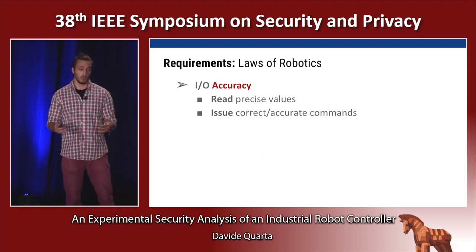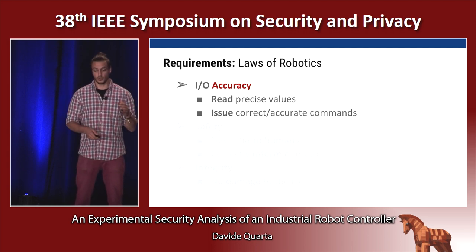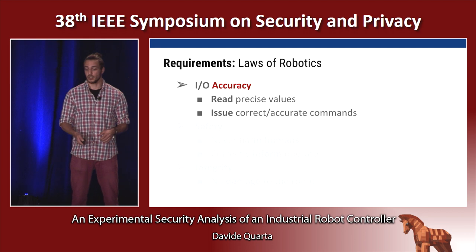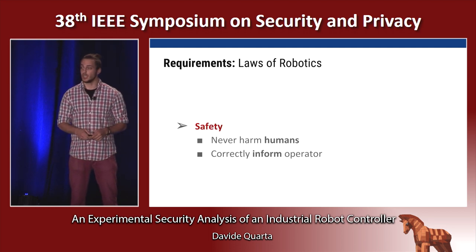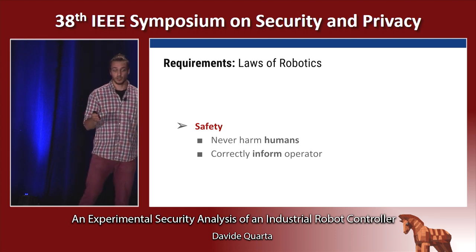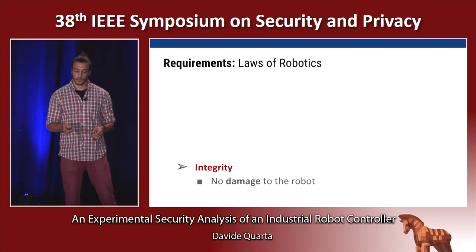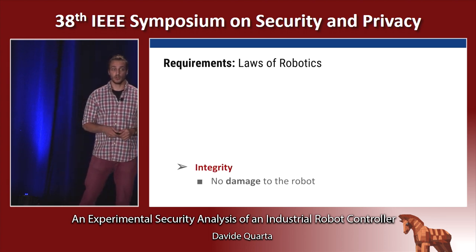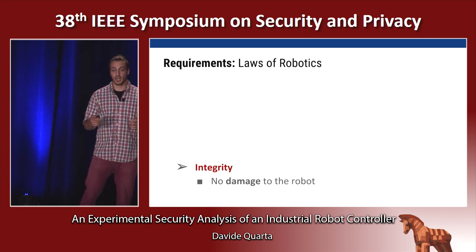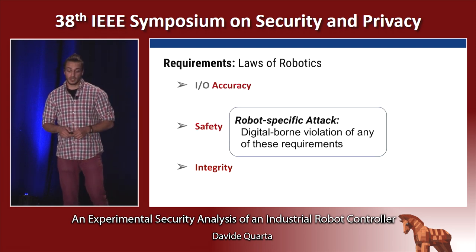So how can we define a robot-specific attack? We start by looking at the requirements these robots should have. The first is accuracy: the robot should read precise values and issue correct and accurate commands. The second is safety: it should never harm the human and should correctly inform the operator about the robot's status. The third is integrity: no damage should be done to the robot — even if a harmful command is issued, the controller should not execute it. A robot-specific attack is a digital violation of any of these requirements.